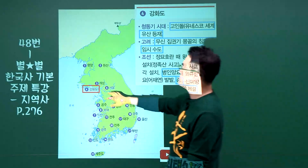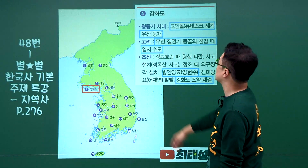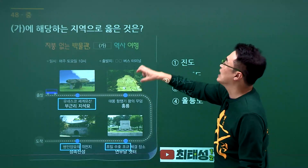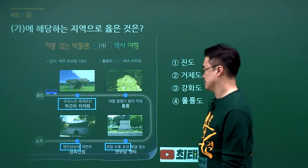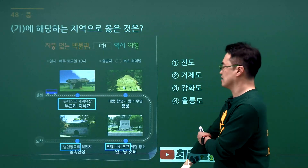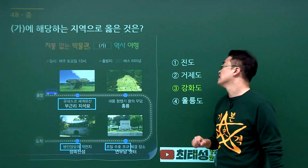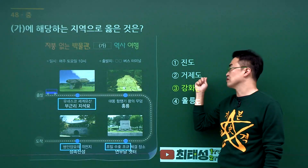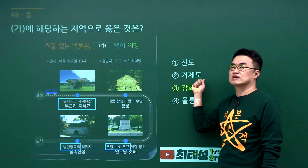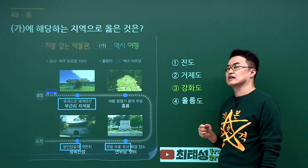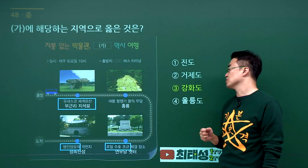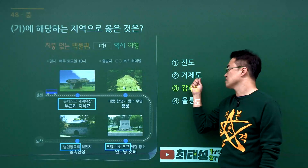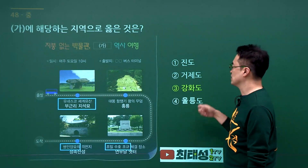강화도 관련 지역 문제입니다. 강화도에는 고인돌도 있고, 몽골 침입 때 임시 수도이기도 했으며, 병인양요와 강화도 조약을 체결한 곳입니다. 문제에서 병인양요의 격전지가 나왔으니 강화도임을 알 수 있습니다. 3번을 고르시면 됩니다. 진도는 명량 이순신 장군과 연결되고, 거제도는 포로수용소와 칠천량 해전이 있었습니다. 울릉도는 동쪽에 있습니다. 정답은 3번입니다.